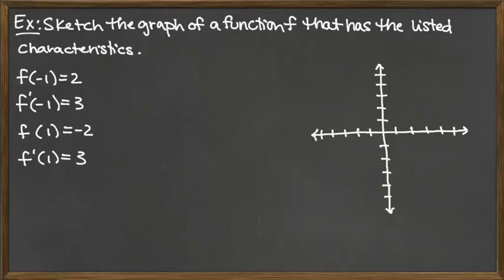In this example, we're going to sketch the graph of a function that has certain characteristics. We're given a couple of different X values to look at. Notice the input values are negative 1 for the first two pieces of information and 1 for the second two pieces of information.